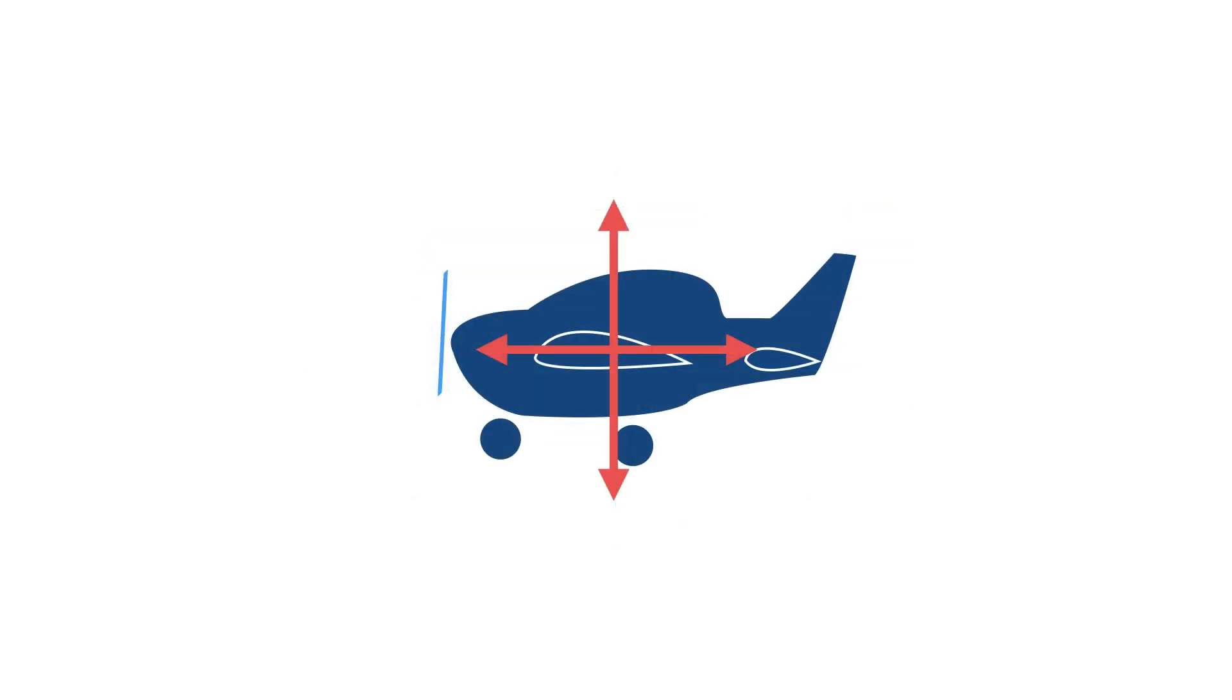These arrows represent the four main forces acting on an aeroplane in flight. For demonstration purposes, these forces are often shown to act from a single spot. But in reality, that's not the case.